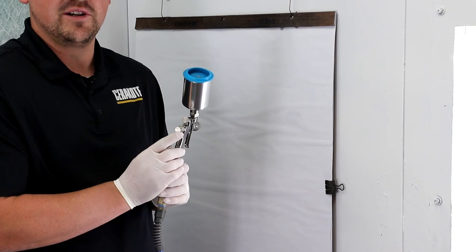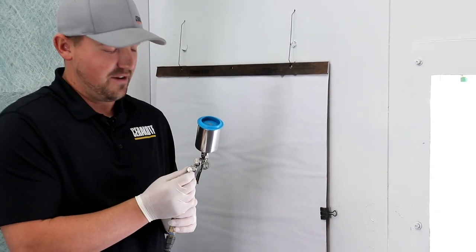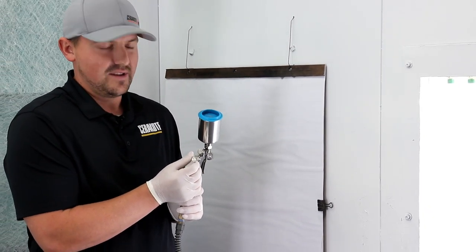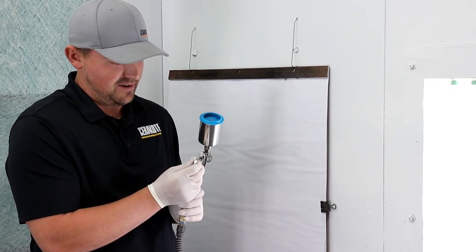Next would be the fluid adjustment knob, getting enough fluid to come out of the gun. I'll start that somewhere around one to one and a half turns out.